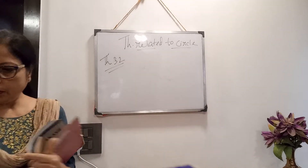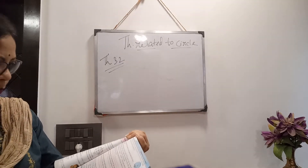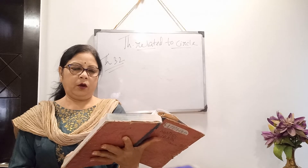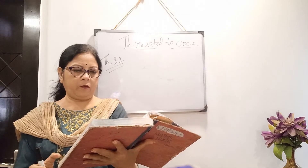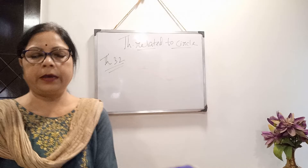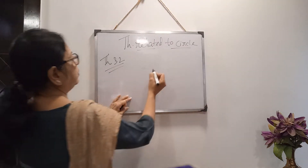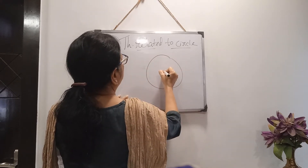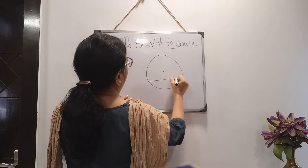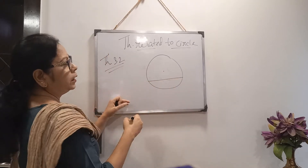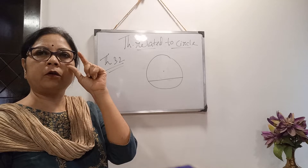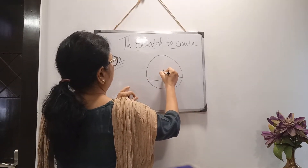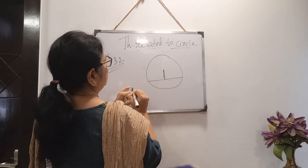In theorem 32, it is stated that the perpendicular drawn to a chord — which is not a diameter — from the center of a circle, bisects the chord. The diagram shows a circle with its center, and a chord that is not a diameter. All of you know, diameter is also a chord, but this chord is not a diameter. If I draw a perpendicular from the center on this chord, then it will bisect it.